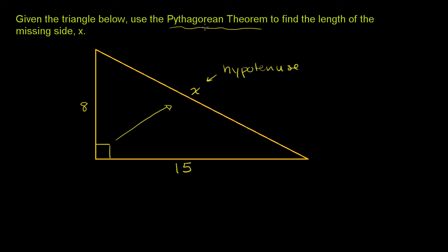The Pythagorean theorem tells us that the sum of the squares of the shorter sides is equal to the square of the hypotenuse.